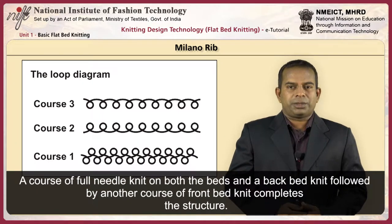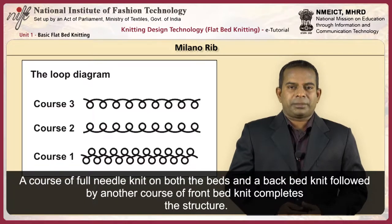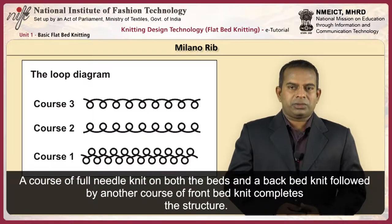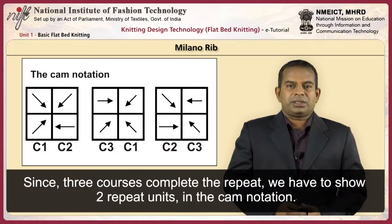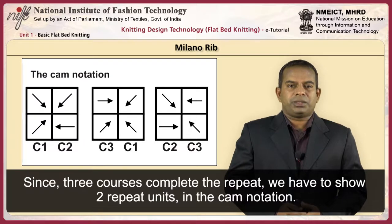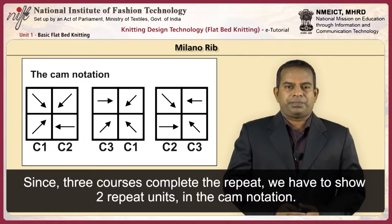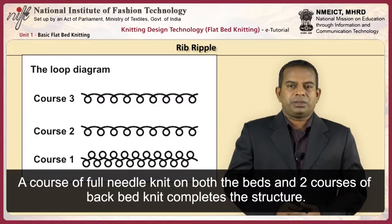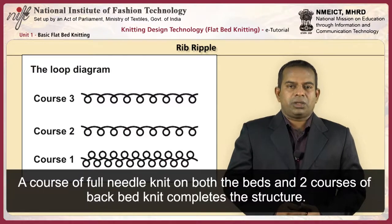To produce milano rib, start with a course of full needle knit on both beds and a back bed knit, followed by a course of front bed knit to complete the structure. Since three courses complete the repeat, two repeat units are shown in the cam notation. To produce rib ripple, start with a course of full needle knit on both beds and two courses of back bed knit to complete the structure.